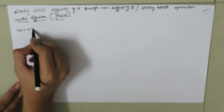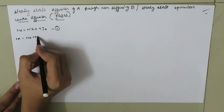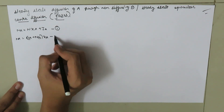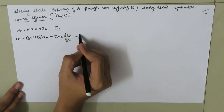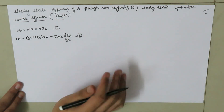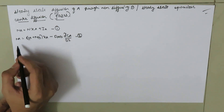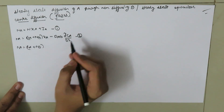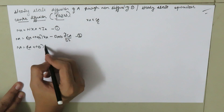The general governing equation is: N_A is equal to N times X_A plus J_A (equation 1). We can write this as N_A equals (N_A plus N_B) times X_A, and J_A equals negative D_AB times dC_A/dz (equation 2). We are considering this only in the Z direction, so N_A equals (N_A plus N_B) times X_A plus J_A.